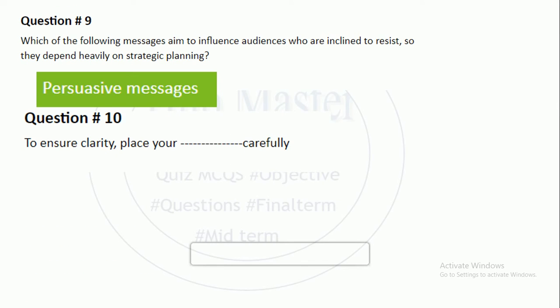To ensure clarity, place your modifiers carefully. Modifiers are words or phrases that change a specific meaning to describe another word. For example, modifying 'burger' with 'vegetarian' gives 'vegetarian burger.' When we convert a word to describe another word, we call it a modifier.